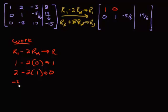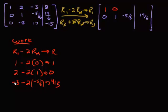Then we're going to have negative 3 minus 2 times negative 5/6, and that's going to get us 4/3. Just plug that into the calculator and then change it back to a fraction — so 4/3. And then we're going to get 8 minus 2 times 19/6, and that's going to equal 5/3.